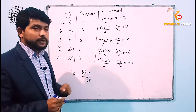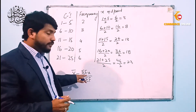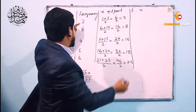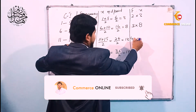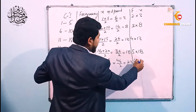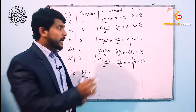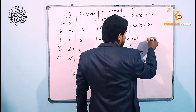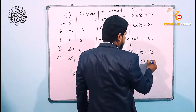Next, हमने frequency को x यानी midpoint से multiply करना है। So let's calculate f×x: 2×3=6, 3×8=24, 4×13=52, 5×18=90, and 6×23=138. Calculation आप भी कर सकते हैं, बहुत ही आसान है।